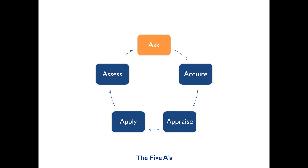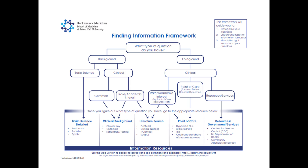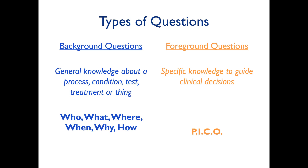You'll remember from previous lessons using the finding information framework that questions are considered either background or foreground. Background questions ask for general knowledge about a process, condition, test, treatment, or thing. Answers to background questions are often best found in textbooks or narrative review articles. Foreground questions, meanwhile, ask for specific knowledge to guide clinical decisions.